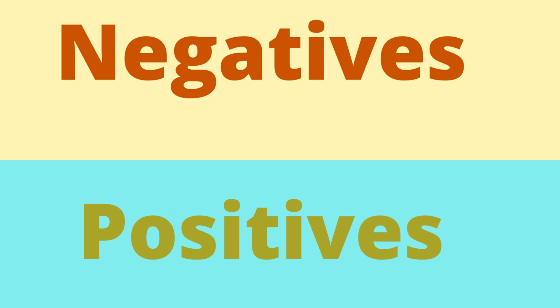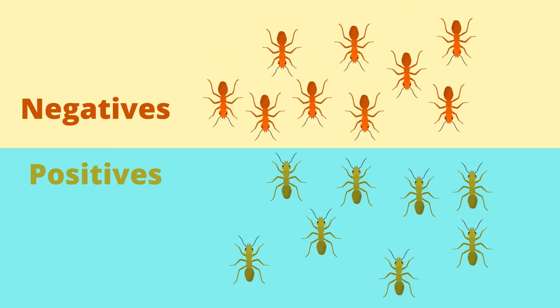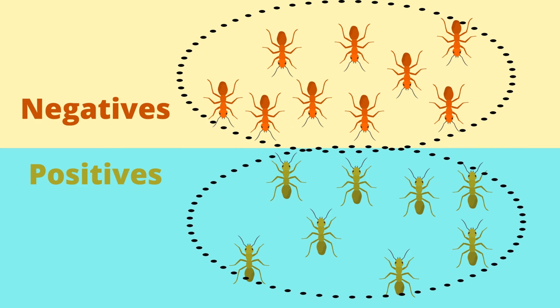When we're adding negatives and positives, I would like for us to think of a giant battle that takes place between yellow-colored ants and orange-colored ants. Red ants represent negatives, and yellow ants represent positives.